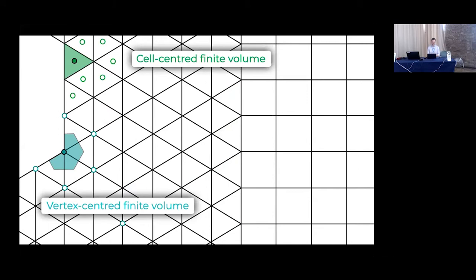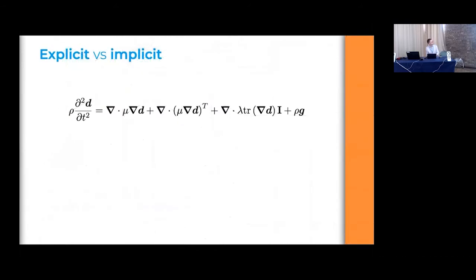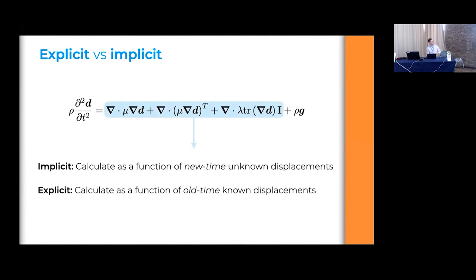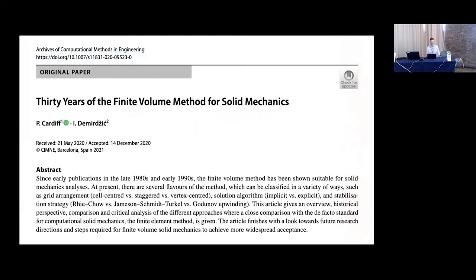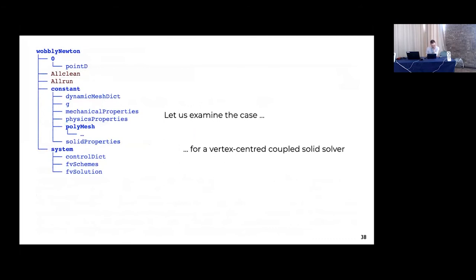Regarding implicit versus explicit: if you calculate divergence of stress in terms of unknown displacement, you form a linear system Ax=b — that's implicit. Or you use old time-step values of displacement — that's explicit, but then you're subject to a Courant number less than one, requiring small time steps. For further reading, I published a 600-reference review paper on finite volume methods for solid mechanics last year if you want bedtime reading.